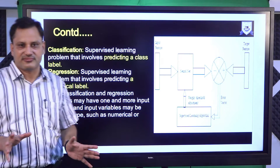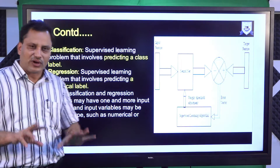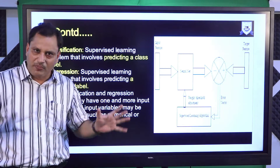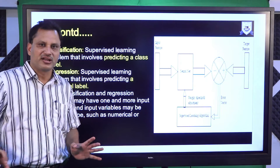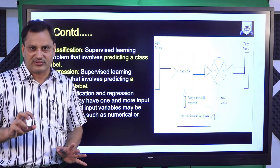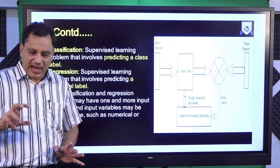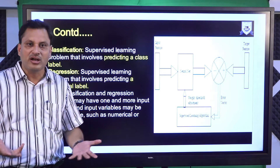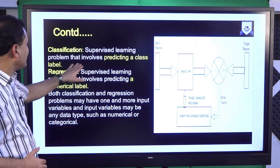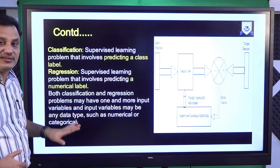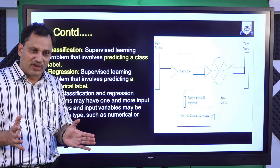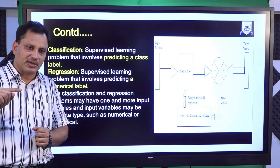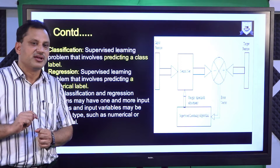A good example of supervised learning is classification. Classification means a large number of parameters exist and you want to put them into different classes based on known characteristics. The characteristics of each group are known beforehand, and you assign values to groups accordingly. Supervised learning is very useful when performing classification — it involves predicting a class label for given inputs.